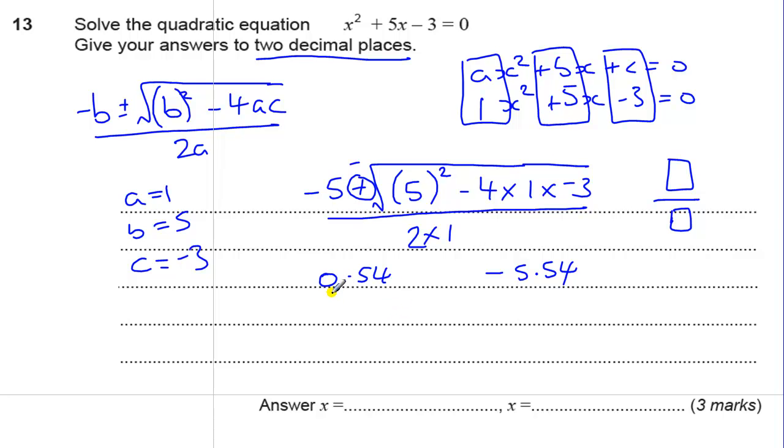There's one mark for these two answers. There's one mark for correctly substituting the values in. Oh, you're allowed one error. So if you get one error in this formula when you put the values in, then you'll get one mark. If you get it all right, that's two marks for just writing the formula down. There we go, three marks.